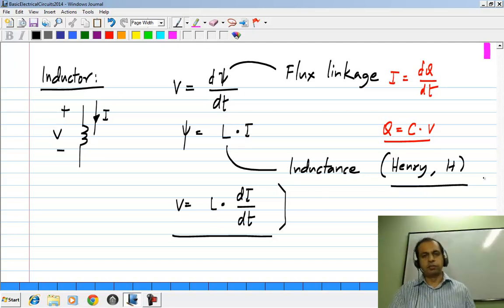Inductance as I mentioned earlier is measured in Henry's. What does this relationship say? If the current is increasing at the rate of 1 ampere per second, and if the inductance is 1 Henry, the voltage across the inductor will be a constant which is equal to 1 volt.